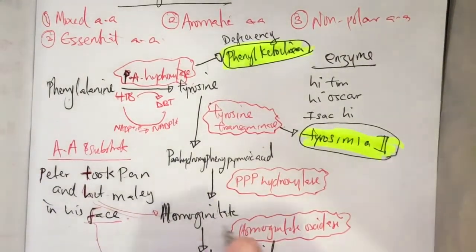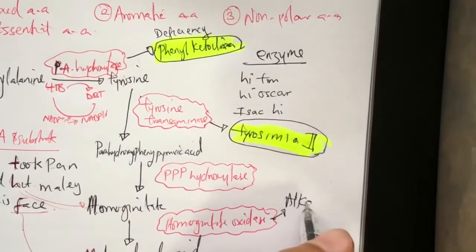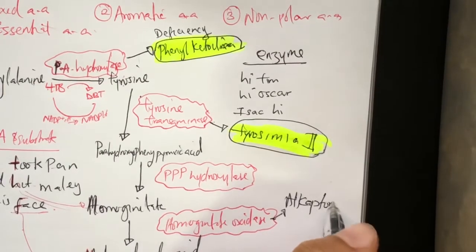Deficiency in homogentisate oxidase leads to alkaptonuria.